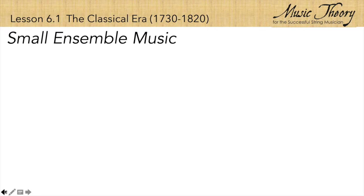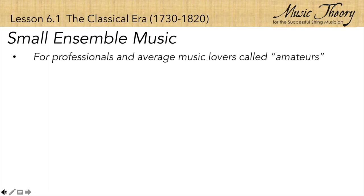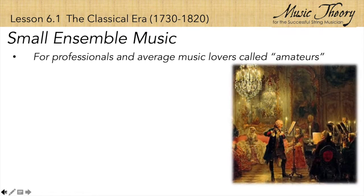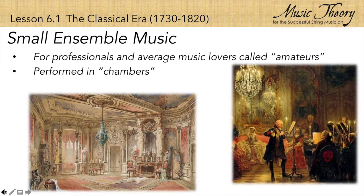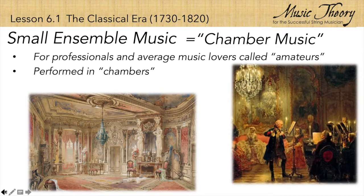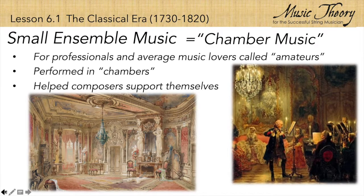Small ensemble music began to thrive during the classical era. Both professional musicians and average music lovers, known as amateurs, performed this kind of music, and it could be performed in middle-class chambers, or rooms, as opposed to concert halls. For this reason, small ensemble music is known as chamber music. Classical composers began writing more chamber music for the people and not just the nobility. Since chamber music was more affordable and accessible to a wider audience, composers relied less on the rich and began to support themselves more easily.